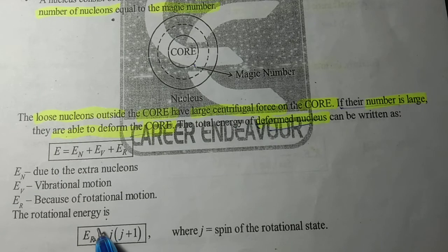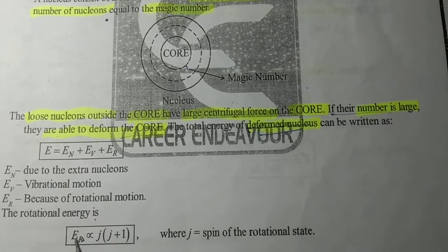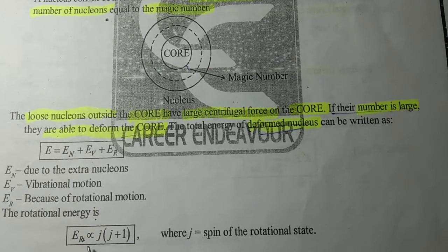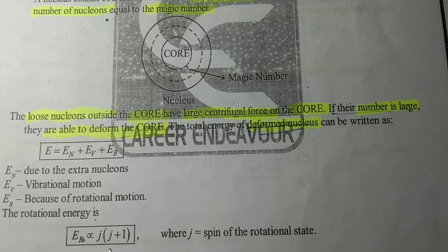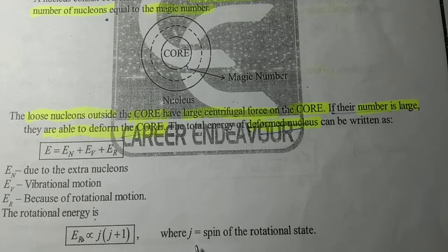The rotational energy is given by Er directly proportional to j(j+1), where j is equal to spin of the rotational state.